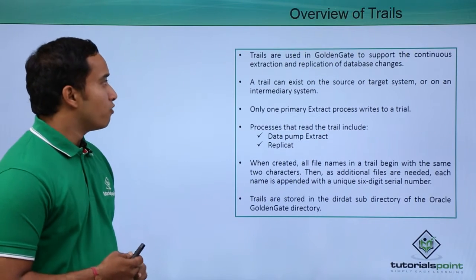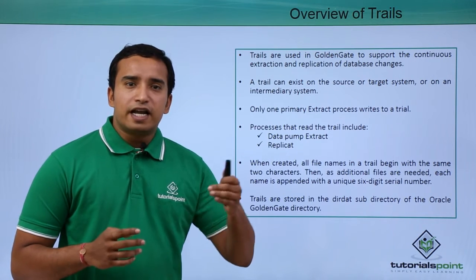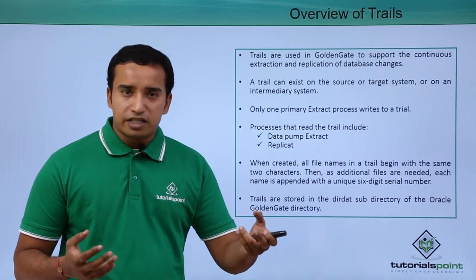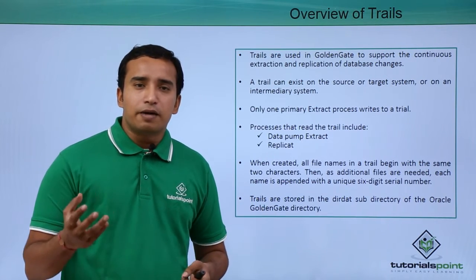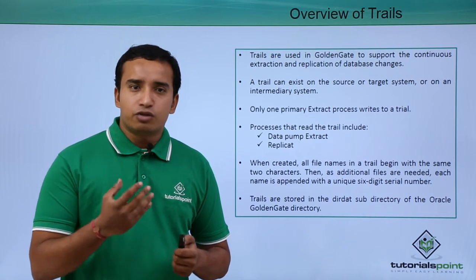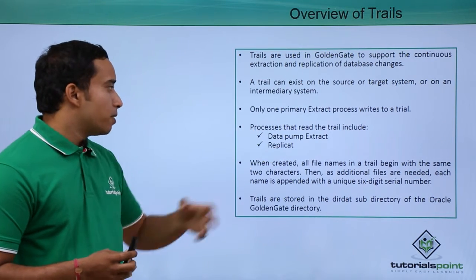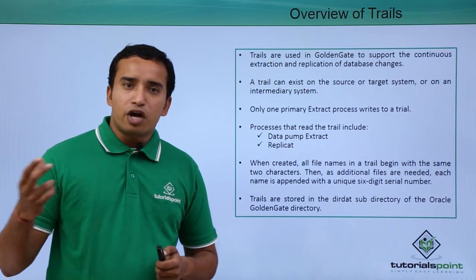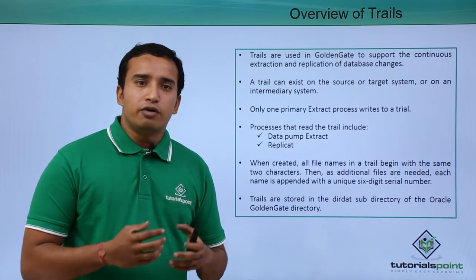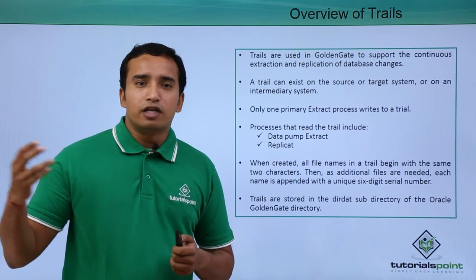As you see in the overview of trail files, trail files are basically used by GoldenGate so that it can store the data. Whatever data is being captured by your extract process, the primary extract process is kept into a trail file, which is a physical file stored at the OS level. This trail file can be accessed by the data pump process and the replicate process. The data pump process, which is the secondary extract process, reads this trail file and sends it to the replicate site or the target site.